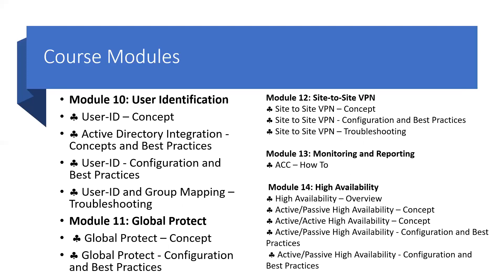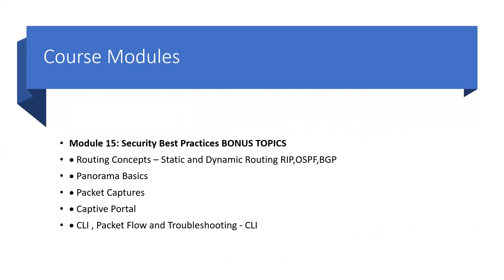Later in this course, we will cover user identification — how to use it, the configuration needed, and best practices. We will cover GlobalProtect, which is Palo Alto's VPN solution, as well as site-to-site VPN. We will also cover monitoring and reporting, and high availability. At the end of the module, as a bonus, we will cover security best practices including routing concepts such as dynamic routing, static routing, RIP, OSPF, and BGP — and why EIGRP is not used here — Panorama basics, packet capture, Captive Portal, and CLI commands for troubleshooting. Palo Alto is mostly used via GUI, but CLI is very helpful for deep-level troubleshooting.